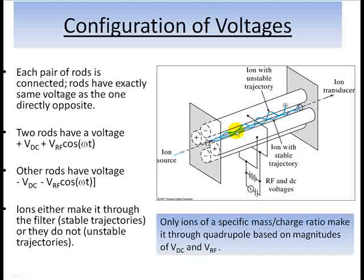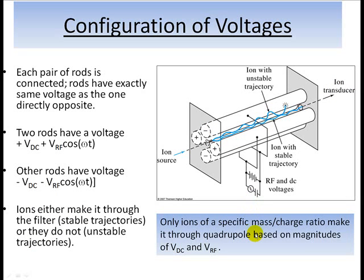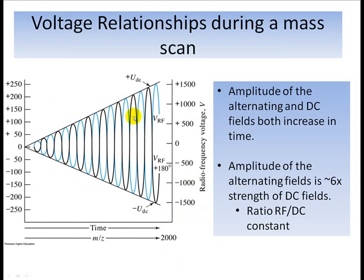Whether an ion makes it through there depends upon the magnitudes of the DC and RF voltages at that given point in time. Over the course of a certain time period, both the DC voltages and the amplitude of the alternating voltages increase, and they kind of increase together in lockstep.